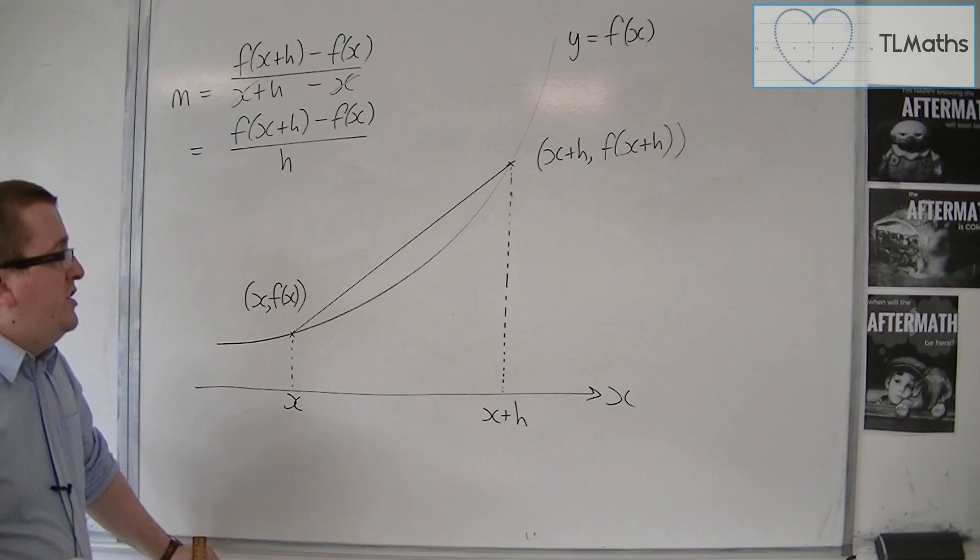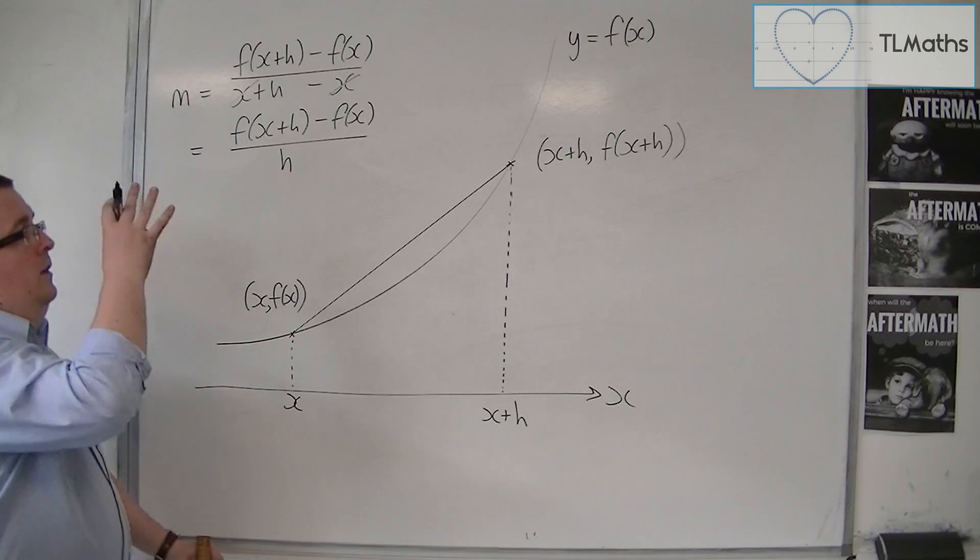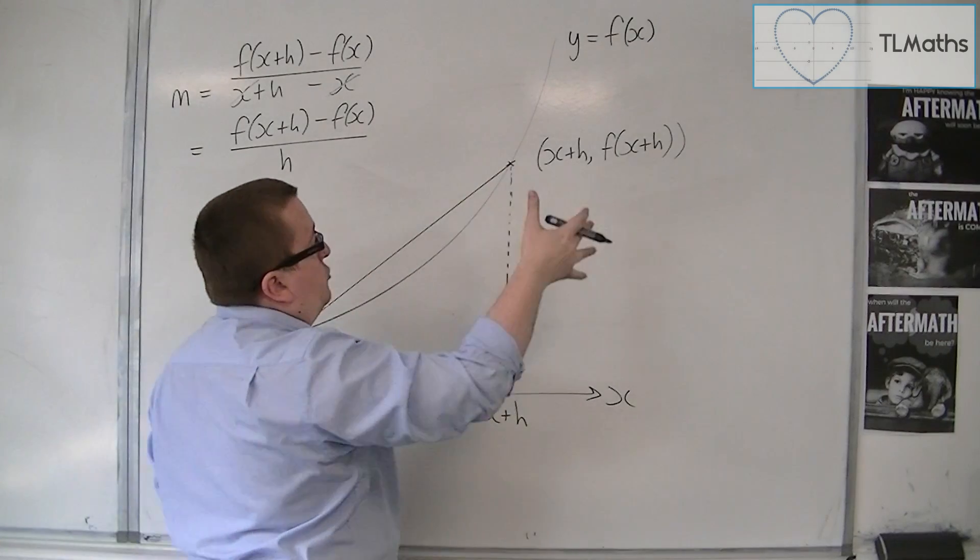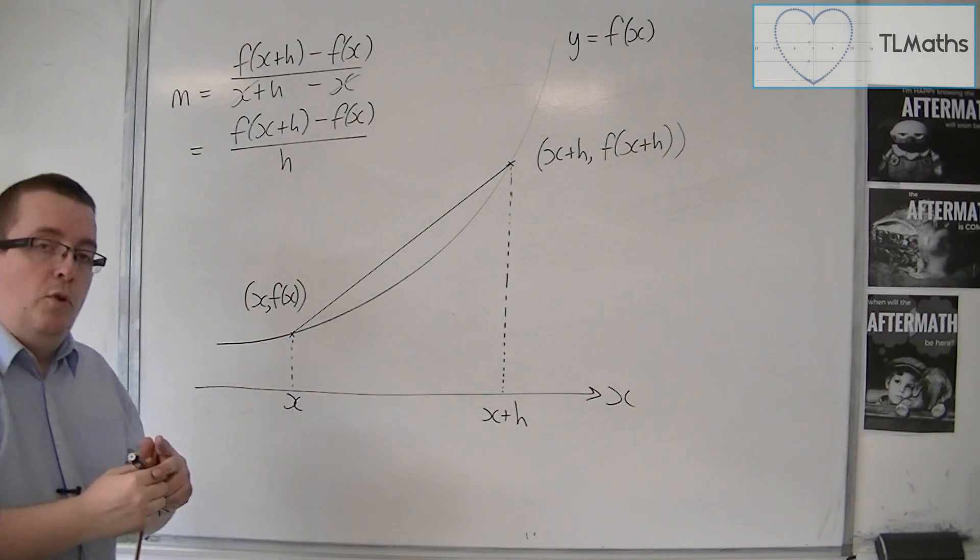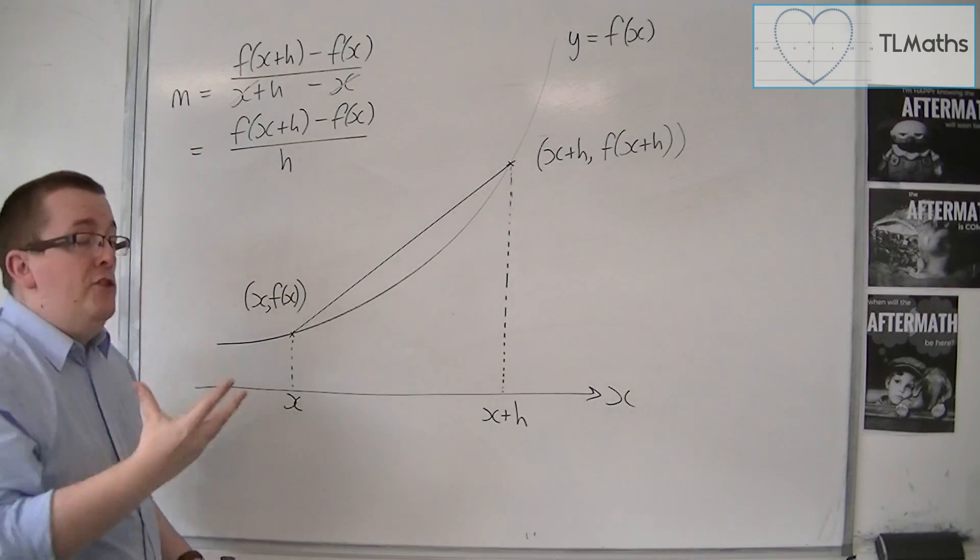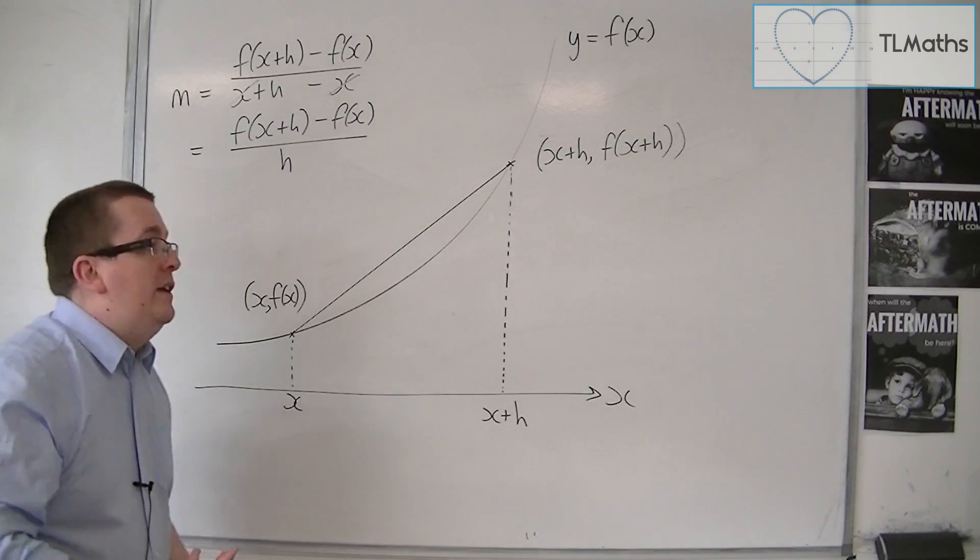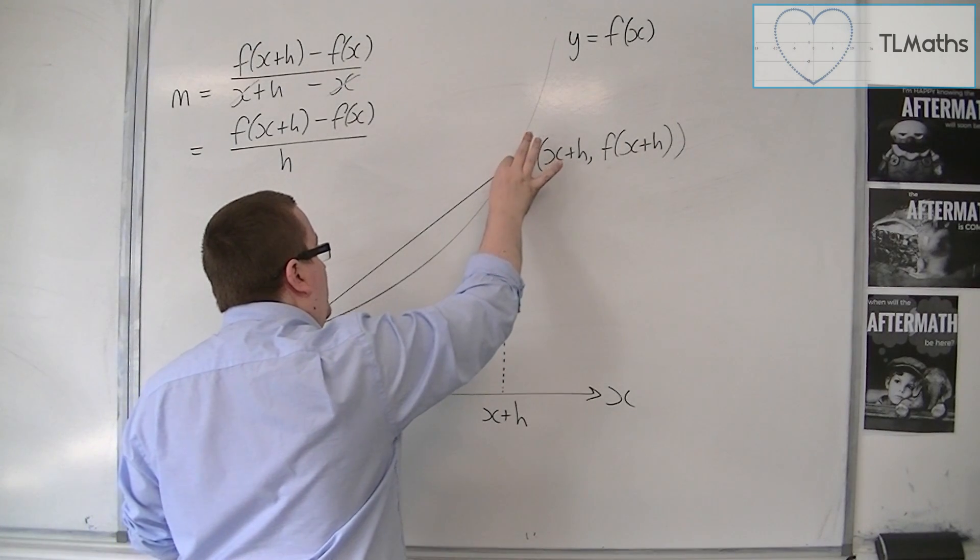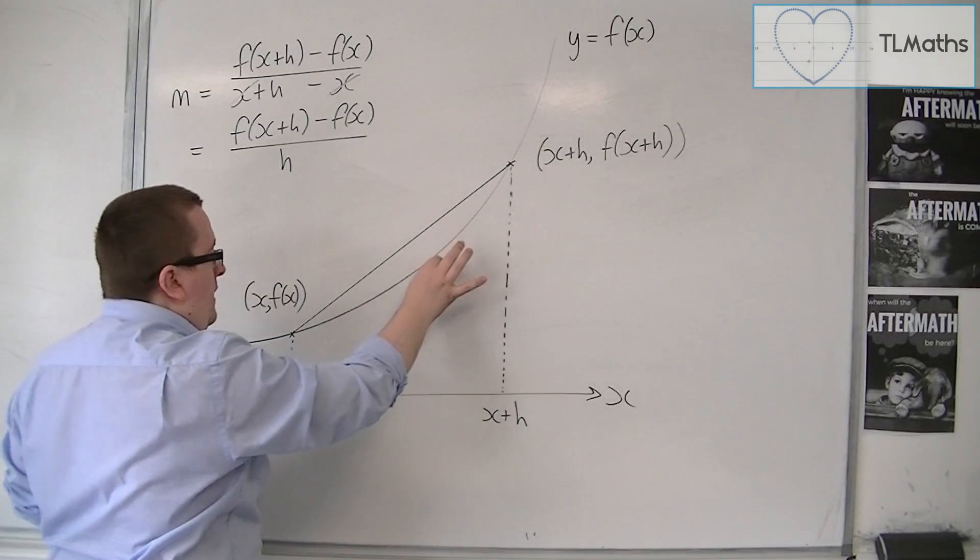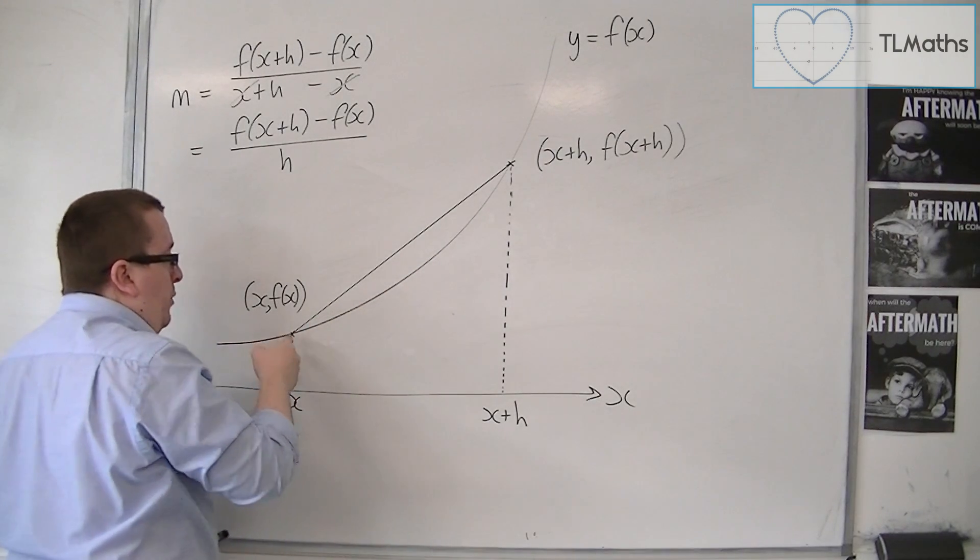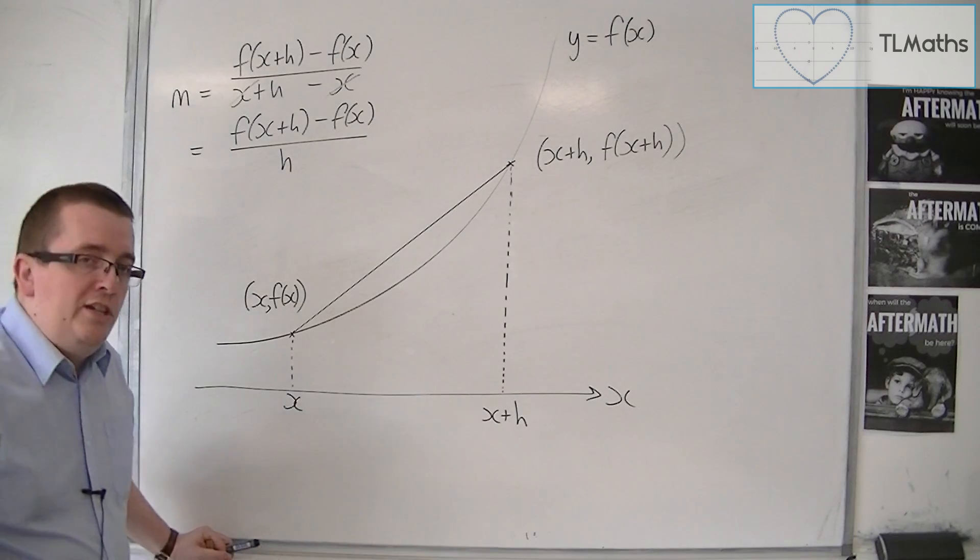Now that all seems reasonable enough. Now by construction, I've decided that this point is reasonably close, but it's not close enough. Effectively, what I want to do is I want to drag that point along the curve until it gets closer and closer and closer to this point here. Now why would I do that?